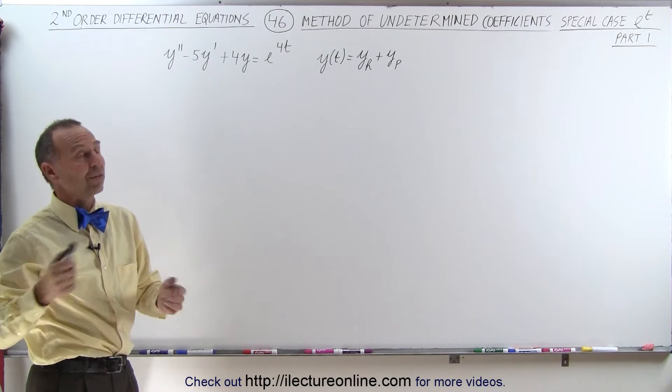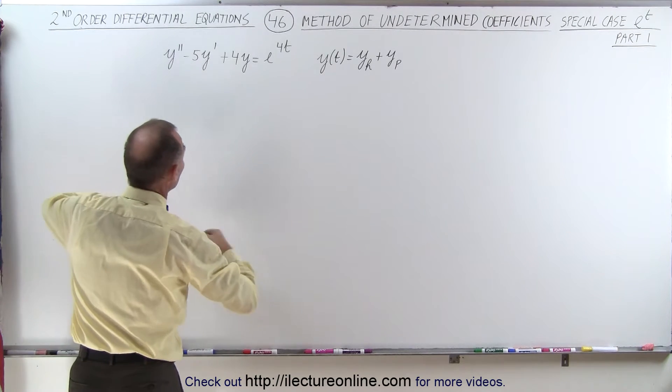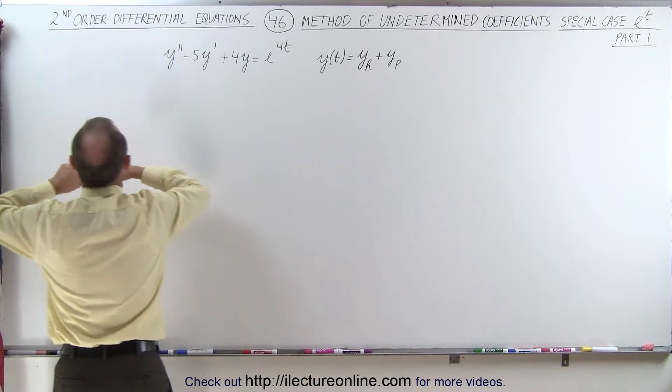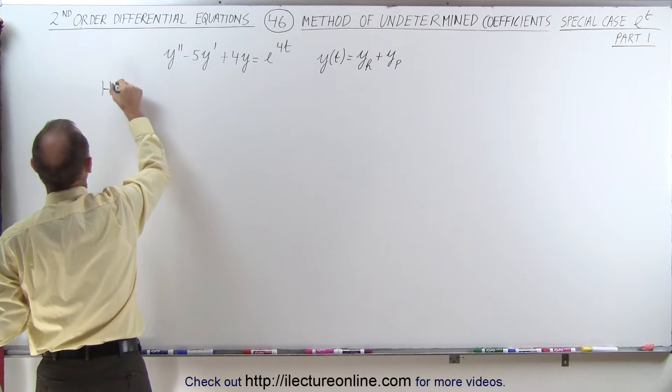But first, of course, we must find the homogeneous part of the solution, y sub h, and we do that by getting the homogeneous equation first.